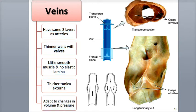Unlike arteries, veins rely on the pressure from the heart's contraction and surrounding skeletal muscles to propel blood through them. Blood moving through veins is at a lower pressure than arterial blood.